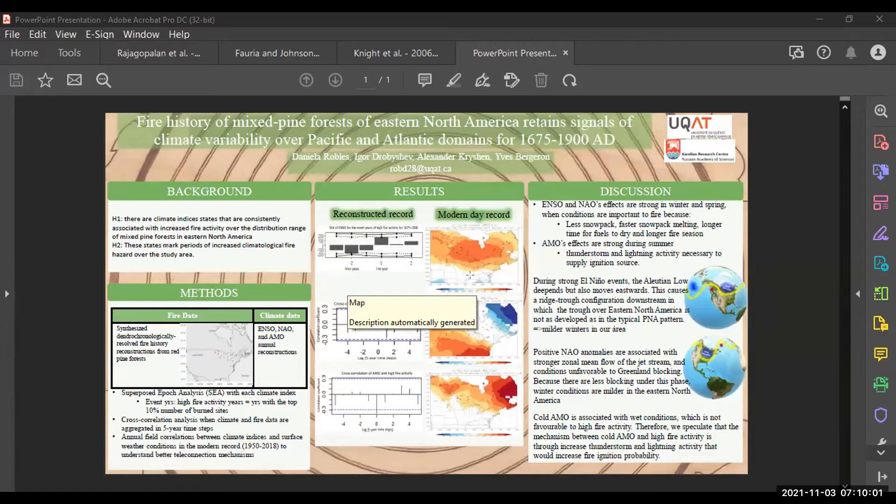And for the climate data, I used the reconstructions of the climate indices that I mentioned. So for the analysis that I used, first I conducted superposed epoch analysis with each climate index. And in these superposed epoch analyses, the event years were high fire activity years. So I have to tell you something about the fire data set so you understand how I define high fire activity years.